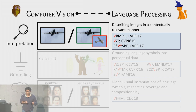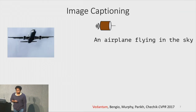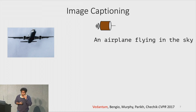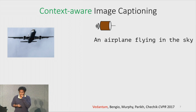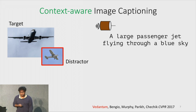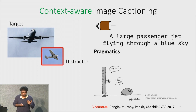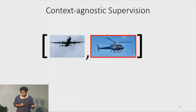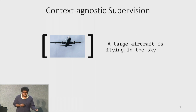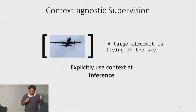Let's look at how we generate sentences for images that take context into account. Image captioning is the problem where you have an input image and generate something like 'an airplane is flying in the sky.' The context-aware version says something discriminative relative to a distractor image, like 'a large passenger jet flying through a blue sky.' This is related to pragmatics, which studies how context affects the meaning of words. We want to do this with context-agnostic supervision — training data with an image and its caption.